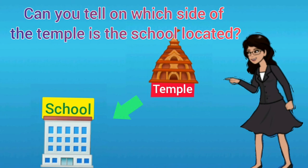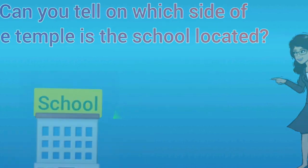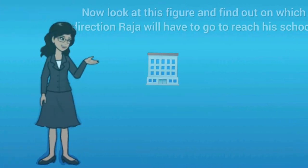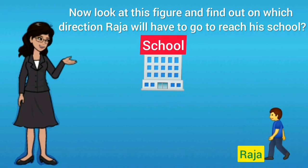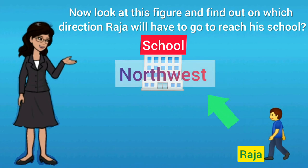Yes, your answer is correct, it is southwest. Now look at this figure and find out in which direction Raja will have to go to reach his school. Yes, you are absolutely right, he will have to go to northwest.